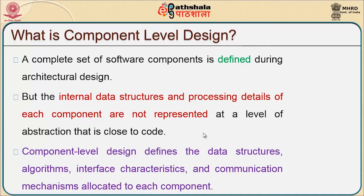While developing an architecture, we need all the individual items as components. But the internal data structure and the processing details of each component are not being presented at a level of abstraction that is close to code. As part of component level design, it will be just an abstraction, where we will not be mentioning the data structure or processing details of each component.